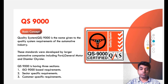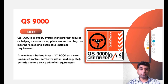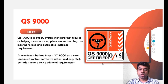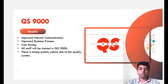Coming to the scope, QS 9000 is a quality system standard that focuses on helping automotive suppliers ensure that they are meeting their automotive customer requirements. It uses ISO 9000 as a core — all document control, corrective action, and auditing are very similar to ISO 9000 — but it adds a few additional sector-specific requirements which are specific to the automotive industry.